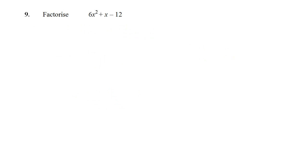Question 9. A little bit harder. We've now got a number in front of x squared. We have a 6 there. So we can't just say, well, what adds up to give 1 and multiplies to give minus 12. But what I do, the method I prefer, is to look at the coefficients a, b, and c, and we use those.